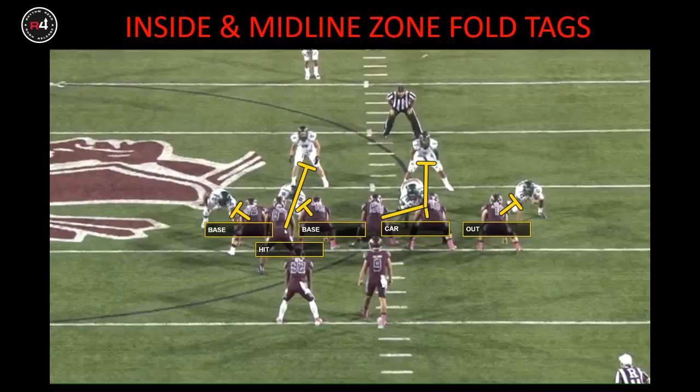Our fullback or tight end here has got to read the post-snap movement of the slanter or the down lineman to determine if he's going to fit into A or B gap on the backside pursuit player.